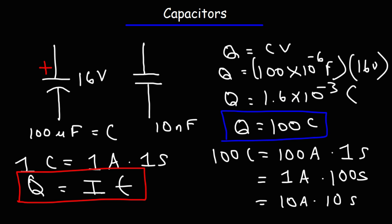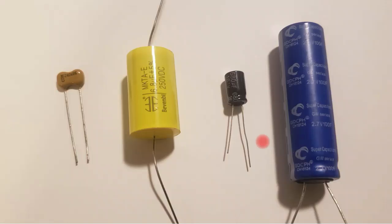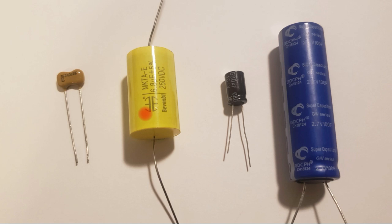You can control the amount of current released by a capacitor by putting a resistor across it. Here we have a picture of different types of capacitors. On the left, these two are non-polarized capacitors; on the right, these are polarized capacitors. The gray strip indicates the negative terminal of the polarized capacitor. This non-polarized capacitor has only 6.8 microfarads, whereas this electrolytic capacitor has 680 microfarads. On the right, we have a supercapacitor with a capacitance of 100 farads.